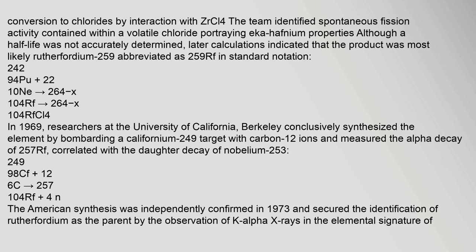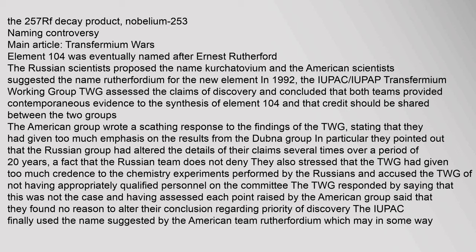In 1969, researchers at the University of California, Berkeley conclusively synthesized the element by bombarding a californium-249 target with carbon-12 ions and measured the alpha decay of 257Rf, correlated with the daughter decay of nobelium-253. The American synthesis was independently confirmed in 1973 and secured the identification of rutherfordium as the parent by the observation of k-alpha x-rays in the elemental signature of the 257Rf decay product, nobelium-253.